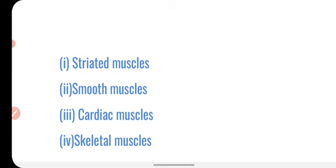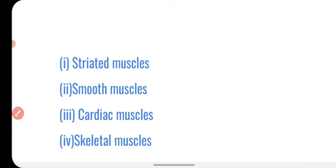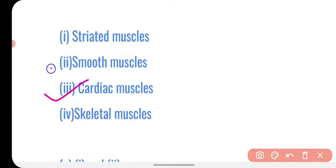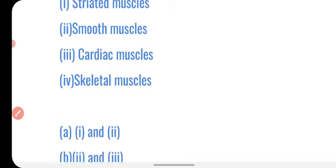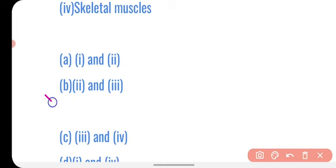Question number seven: which muscles act involuntarily? Options are striated muscles, smooth muscles, cardiac muscles, and skeletal muscles. Smooth muscles act involuntarily — you do not have conscious control over them. Cardiac muscles also do not act under your conscious control. So both smooth muscles and cardiac muscles are involuntary, making option B correct.